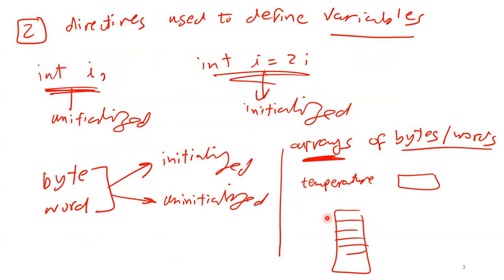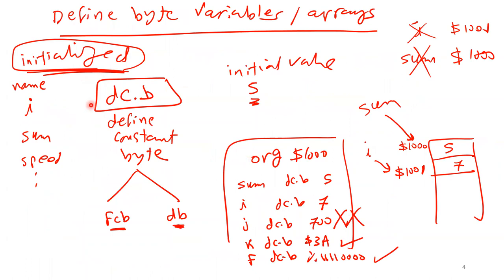I explained how to define variables — by 'variables' I mean bytes and words. A variable can be initialized or uninitialized. The directive DC.B means 'Define Constant Byte' and you put the initial value. For example, ORG 1000 followed by 'sum' means location 1000 is reserved for 'sum'. Every time you use 'sum' in your program, the assembler replaces it with address 1000.